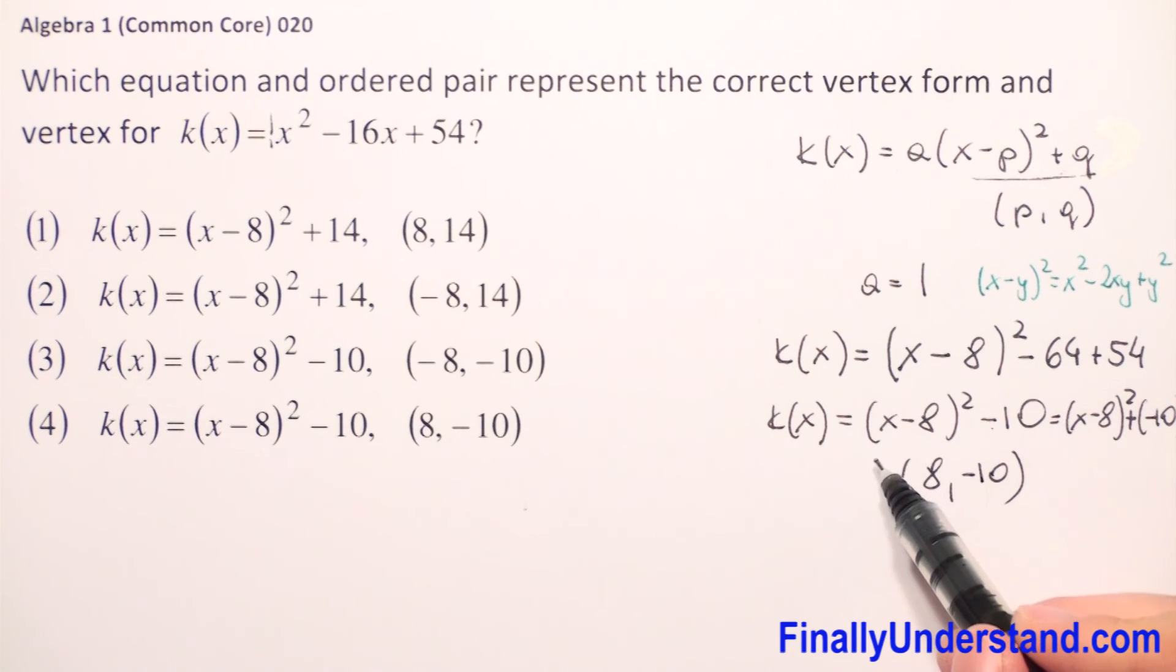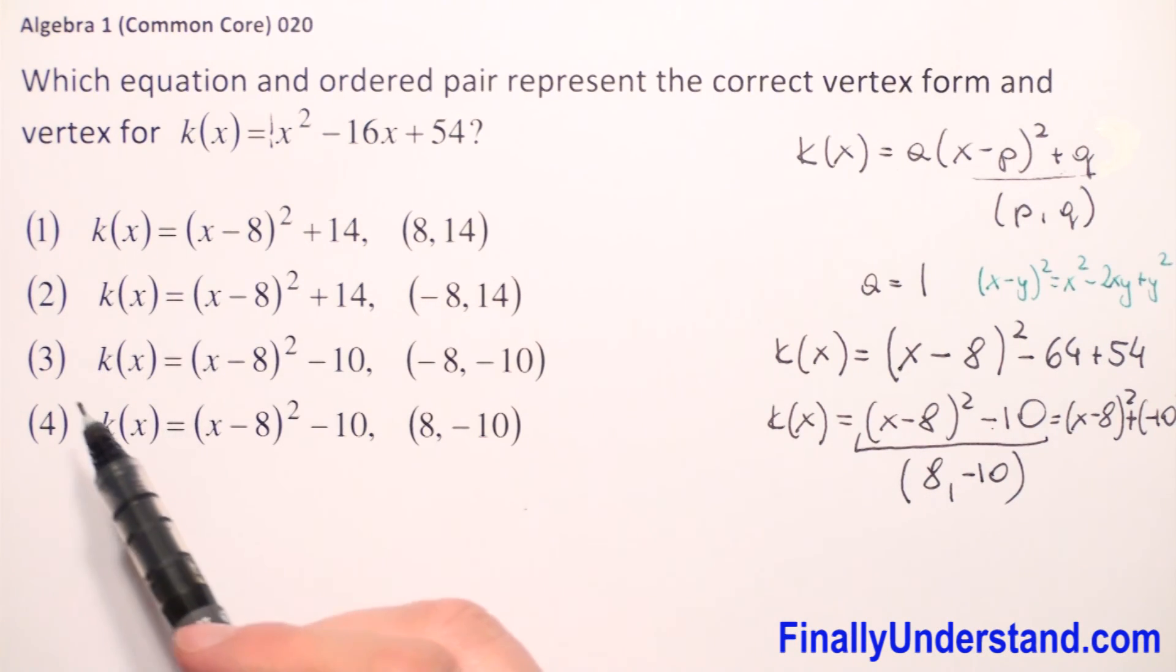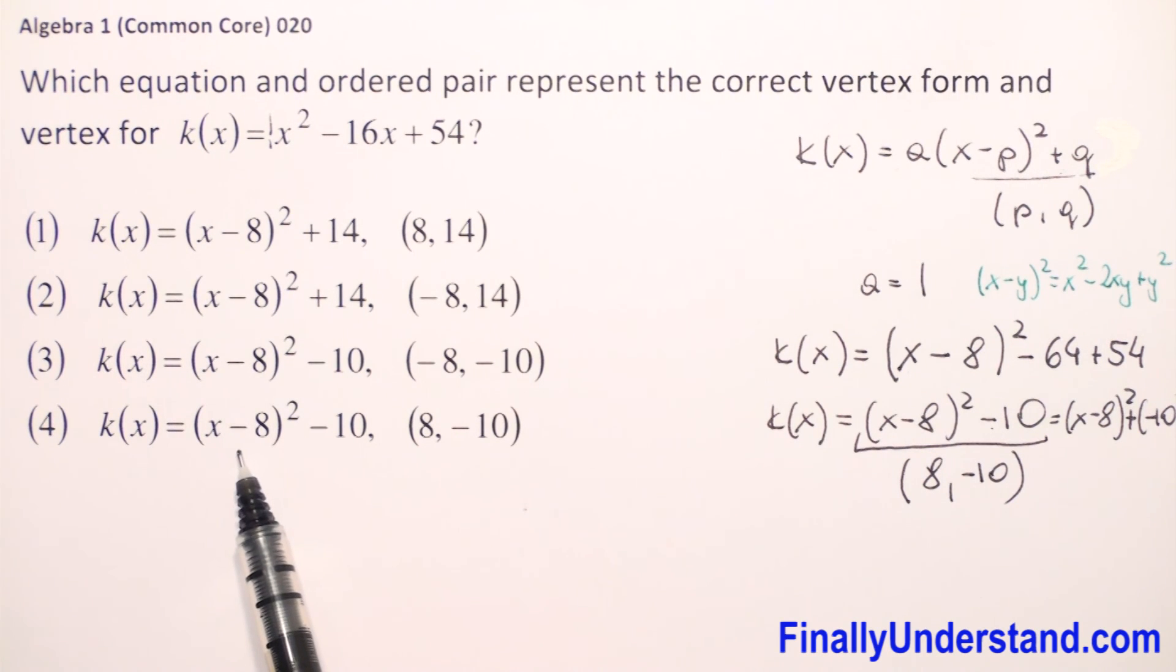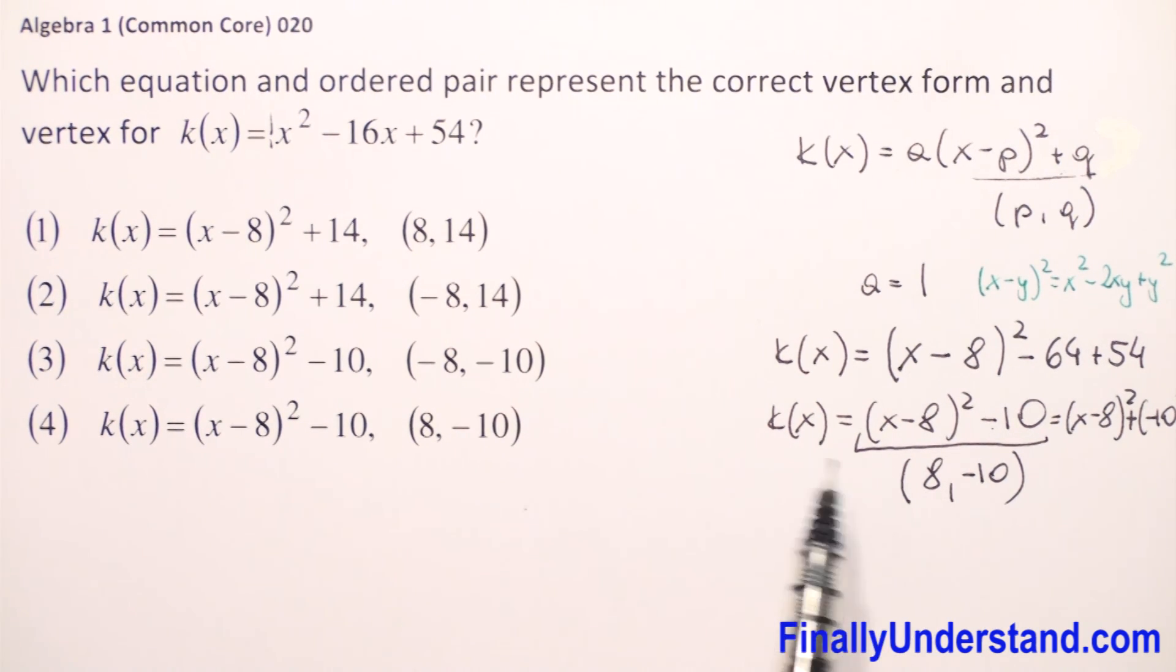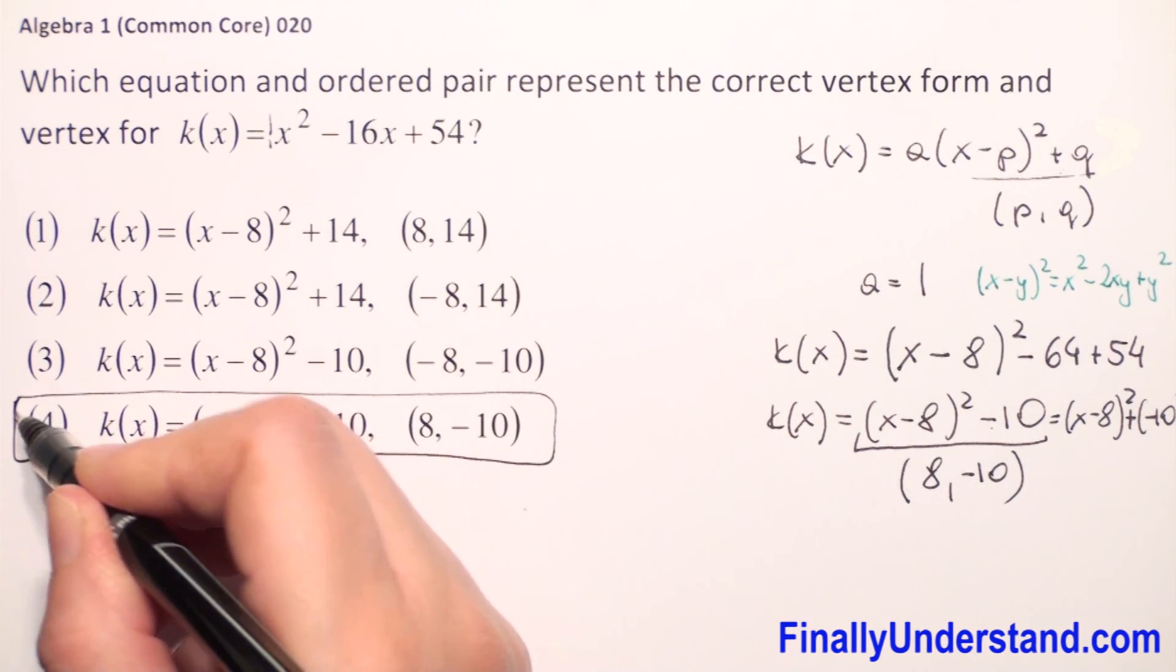We have the vertex form and the vertex of our equation. So now we go to our answers and we have to choose the correct one. Only the last is correct. We have (x - 8)² - 10 and vertex coordinates (8, -10). Exactly the same. So this is my solution.